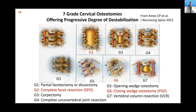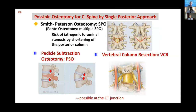For cervical osteotomy in dropped head syndrome, we can usually use two types: one is the Smith-Petersen osteotomy (SPO), and the other is the pedicle subtraction osteotomy (PSO), which is a closing wedge osteotomy. However, the PSO can be used only at the cervicothoracic junction of C7 or T1. We have a risk of iatrogenic foraminal stenosis by shortening of the posterior column, so we must be careful.